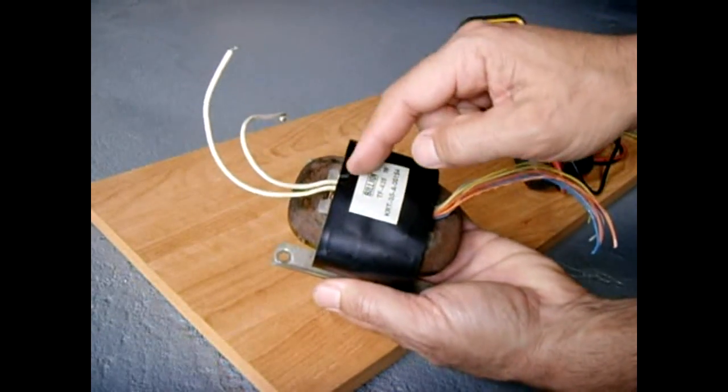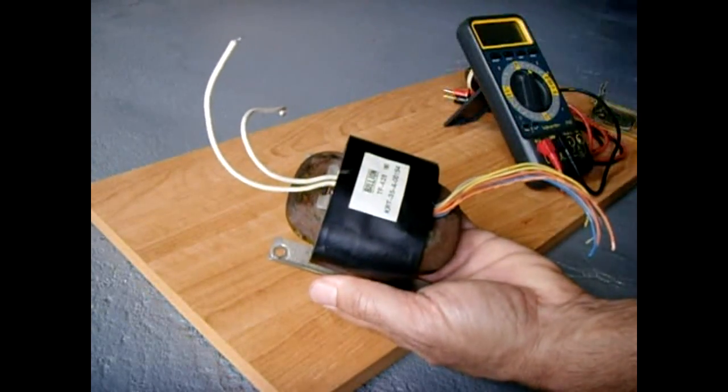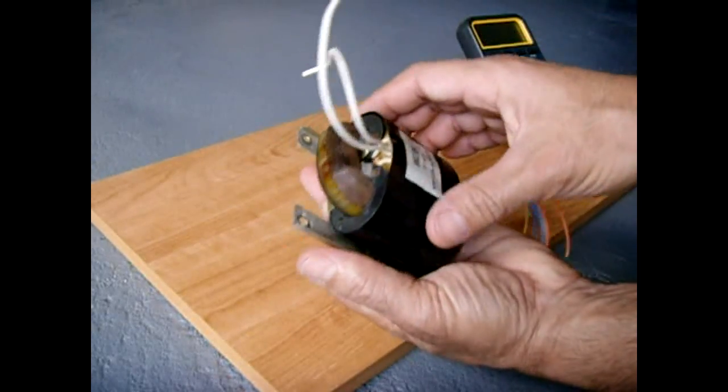I also noticed that when I did a resistance check, the resistance was extremely low, around 3 or 4 ohms. Usually a transformer of this size, which is using roughly, it looks like, maybe 18 to 20 gauge wire.